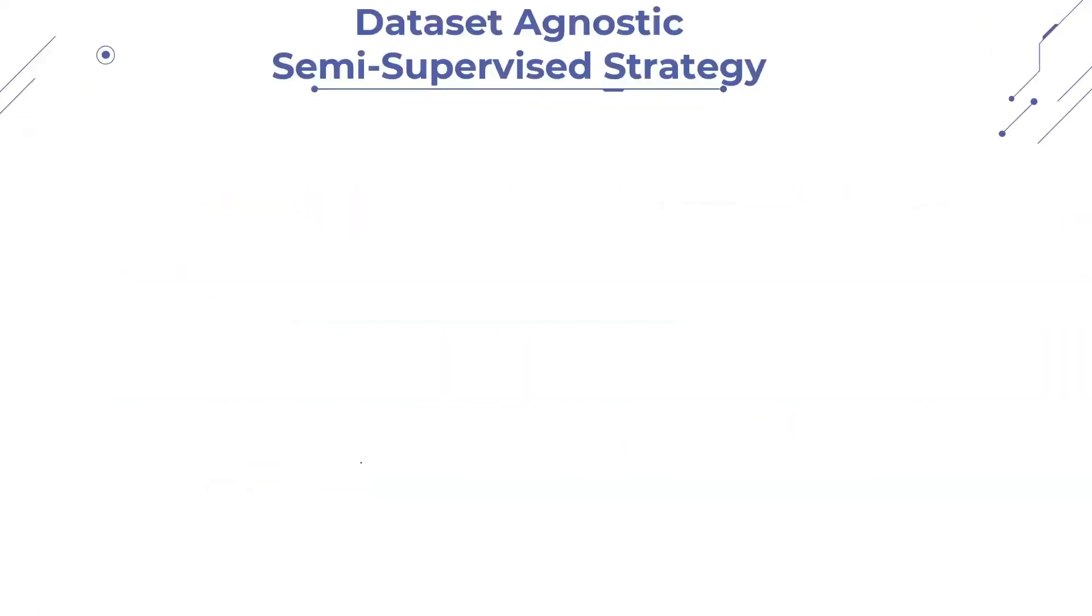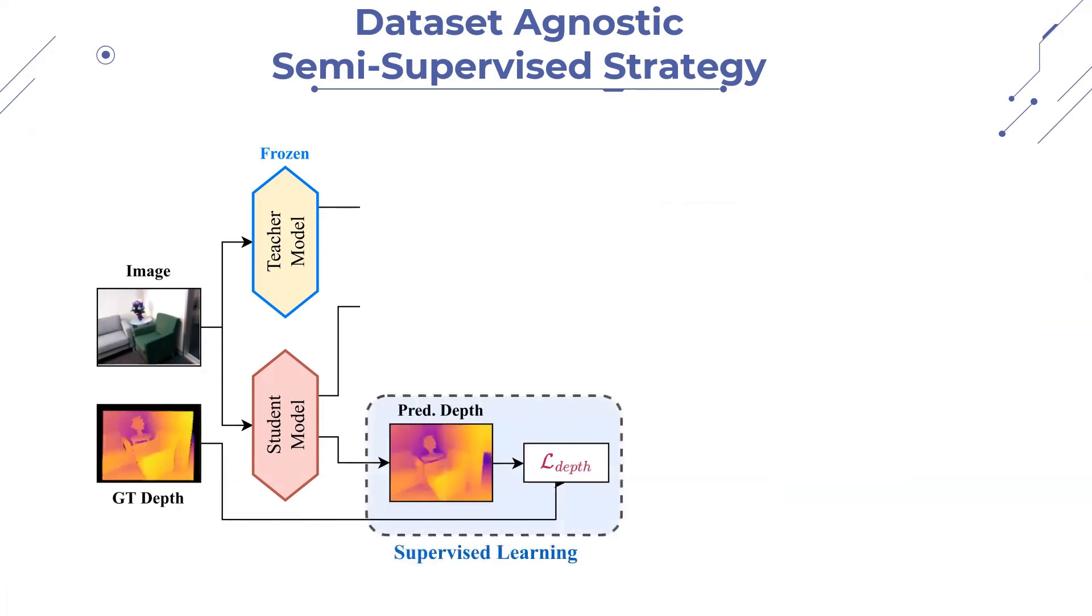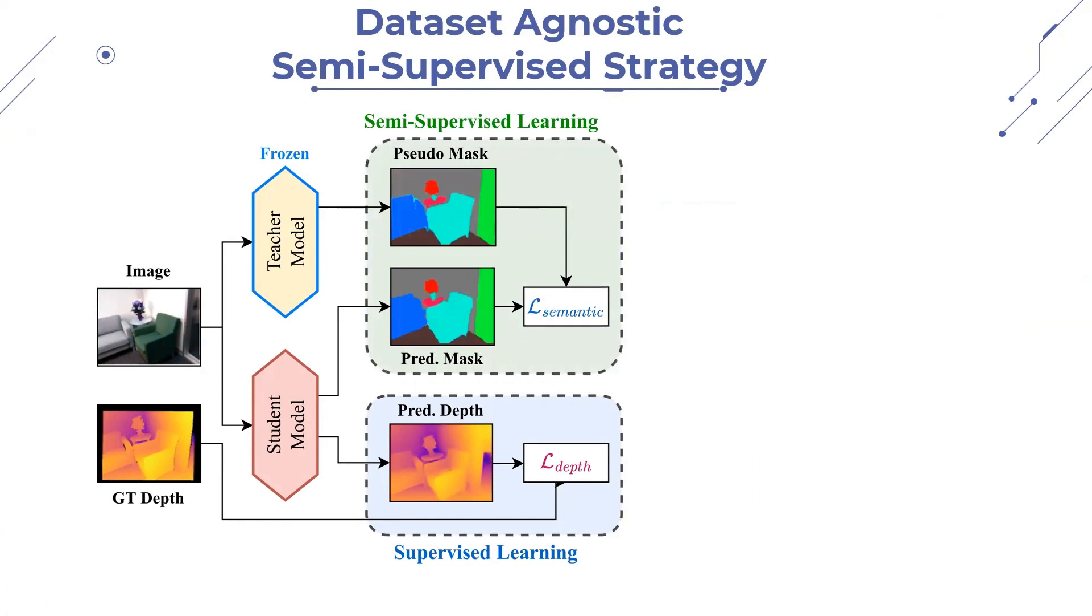Our proposed data-agnostic semi-supervised strategy utilizes a teacher and a student model for learning depth and semantics. In this approach, depth is learned in a supervised manner from ground truth, and semantics is learned in a semi-supervised manner from pseudo-labels produced by the teacher. We utilize a pre-trained OneFormer model as a teacher and our proposed model with semantic transformer as a student.